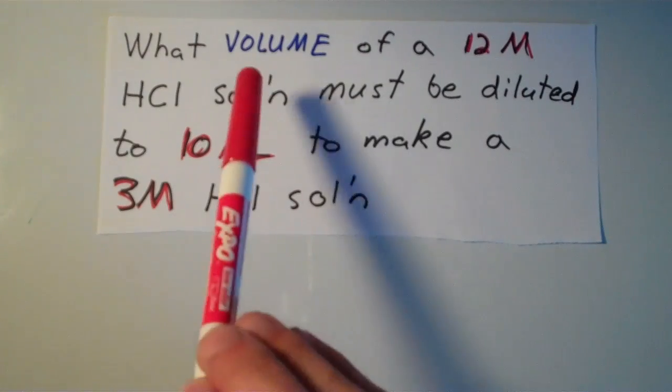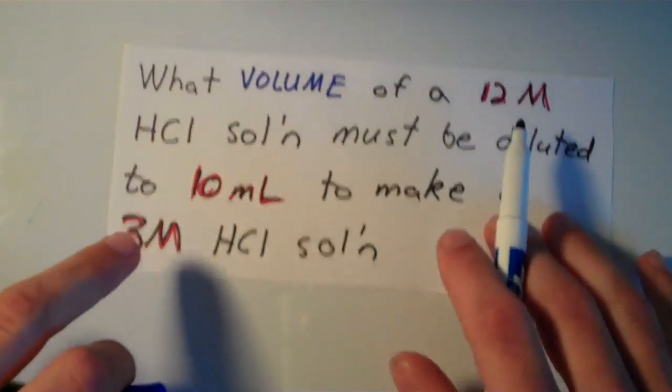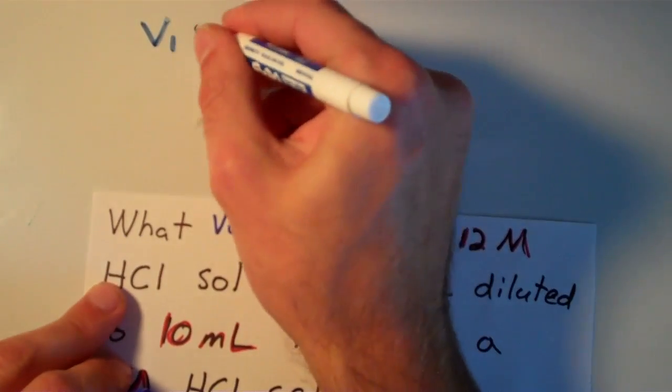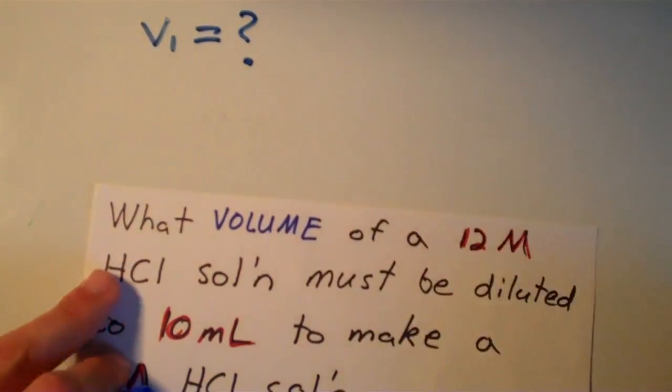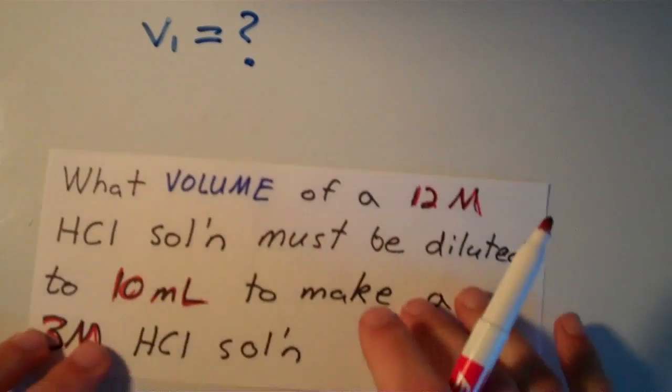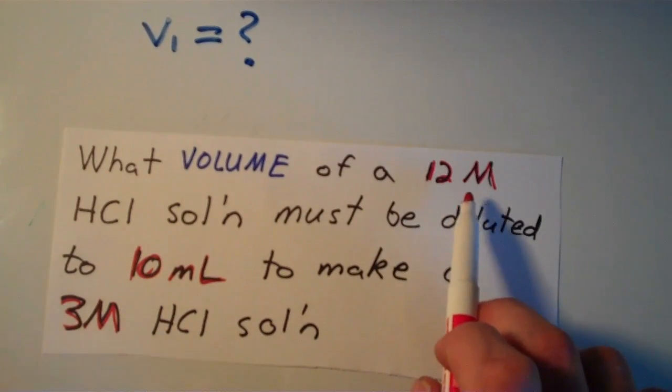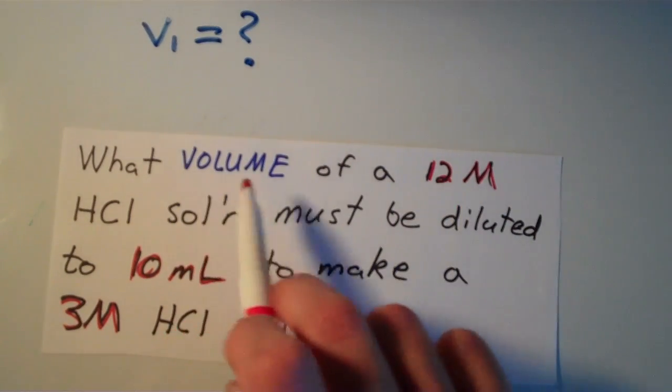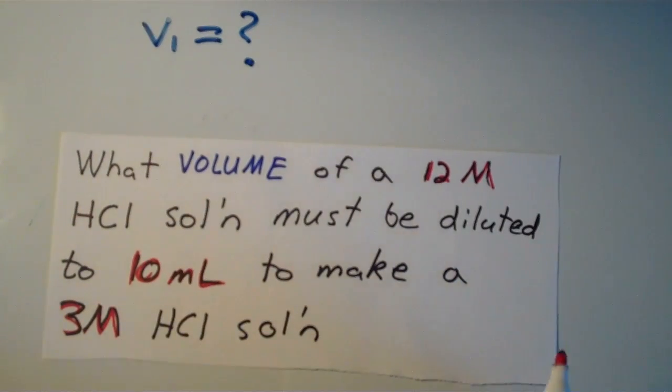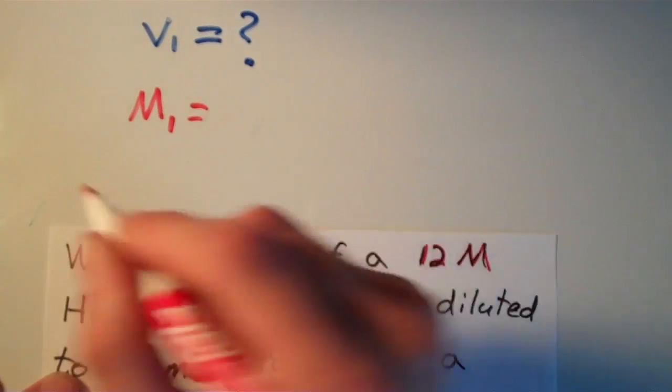So I wrote the volume in blue because that's going to be our unknown. So I'm just going to call that V1. So V1 is our unknown, that's what we're trying to figure out. And it says what volume of a 12 molar solution. So I assume that the 12 molar solution from which you're taking this volume applies to solution 1 as well, the more concentrated one. So I'm going to say that the molarity of 1 is equal to 12 molar.